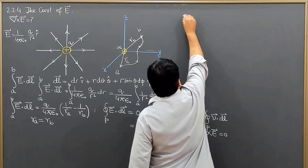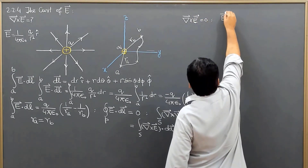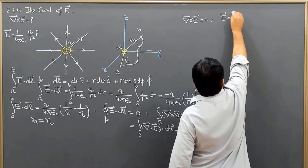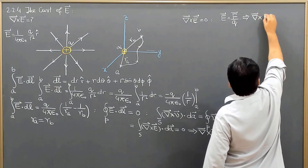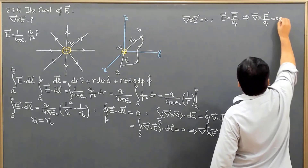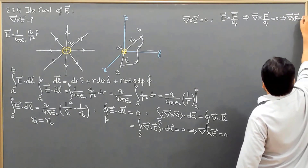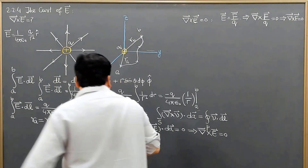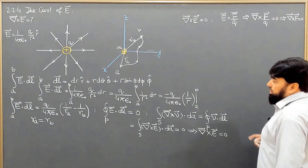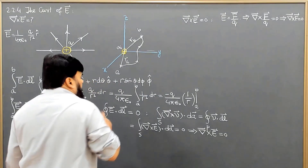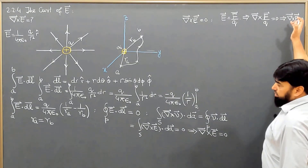Del cross E is equal to zero. We know that E is the force on a unit charge, so I can write that del cross (F over Q) is equal to zero. This implies that del cross F is equal to zero. So the curl of the field is equal to zero, and the curl of the force associated with that field is also equal to zero. Such a field is called a conservative field, and such a force is called a conservative force.